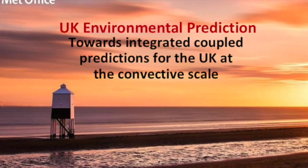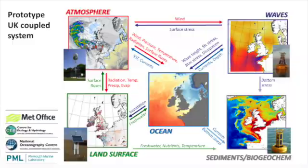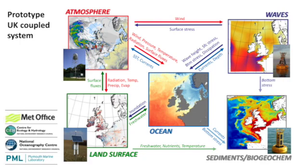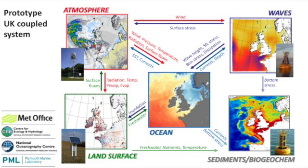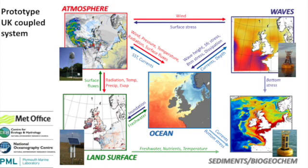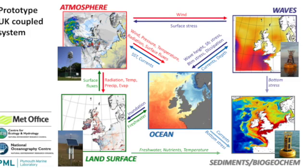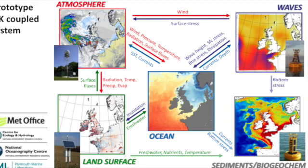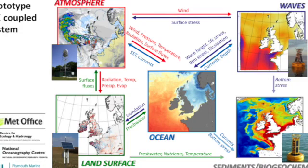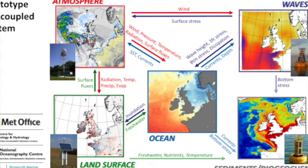We have built a prototype UK coupled system at the kilometre scale as a collaboration between the Met Office and the Natural Environment Research Council's centres — a new model to explore how coupled processes within the local environment affect us. We've coupled atmosphere, land surface, ocean, sediments and more, and are beginning to understand some really interesting facets of our local environment, particularly around our shores where we have large tides, big waves, strong winds, and issues with air pollution.